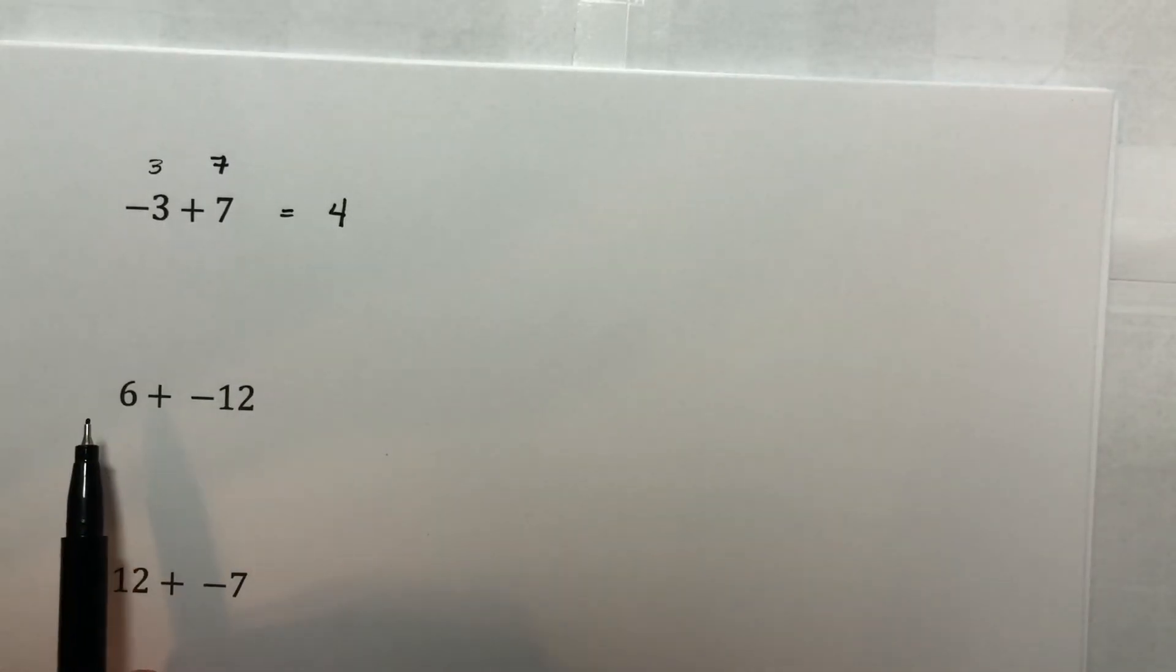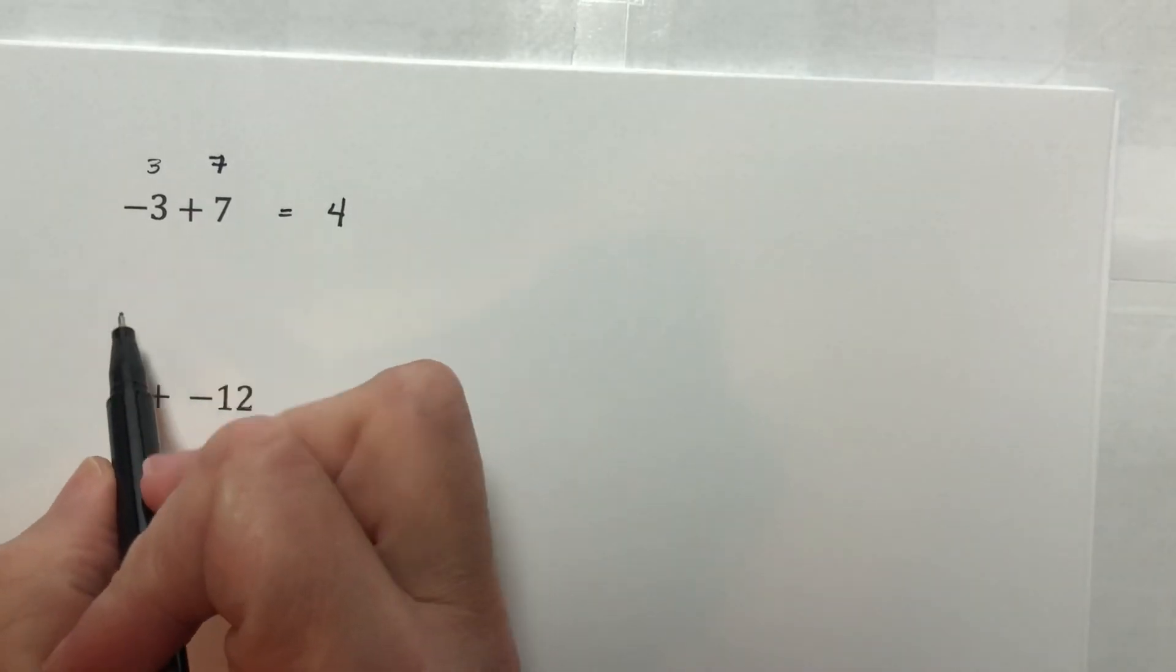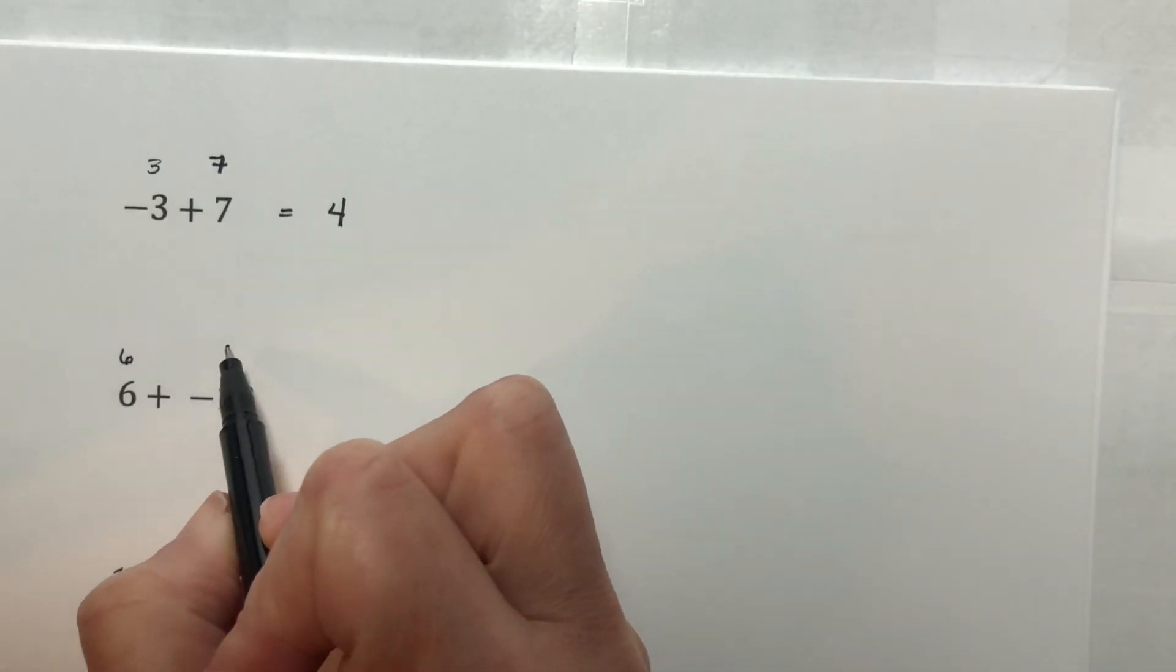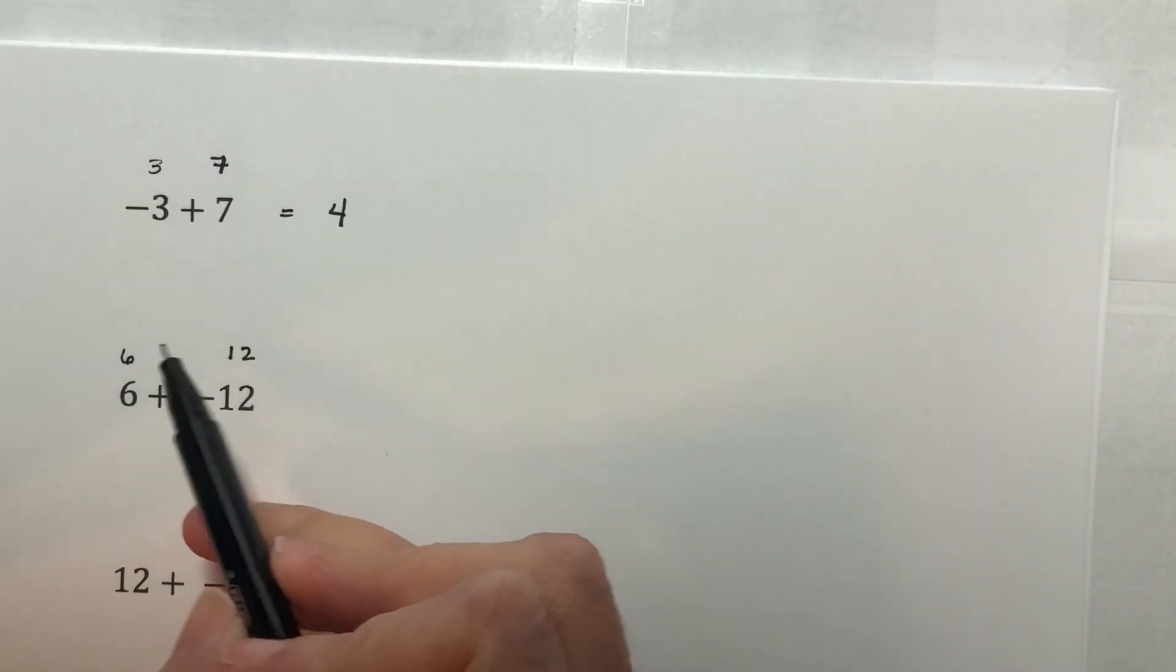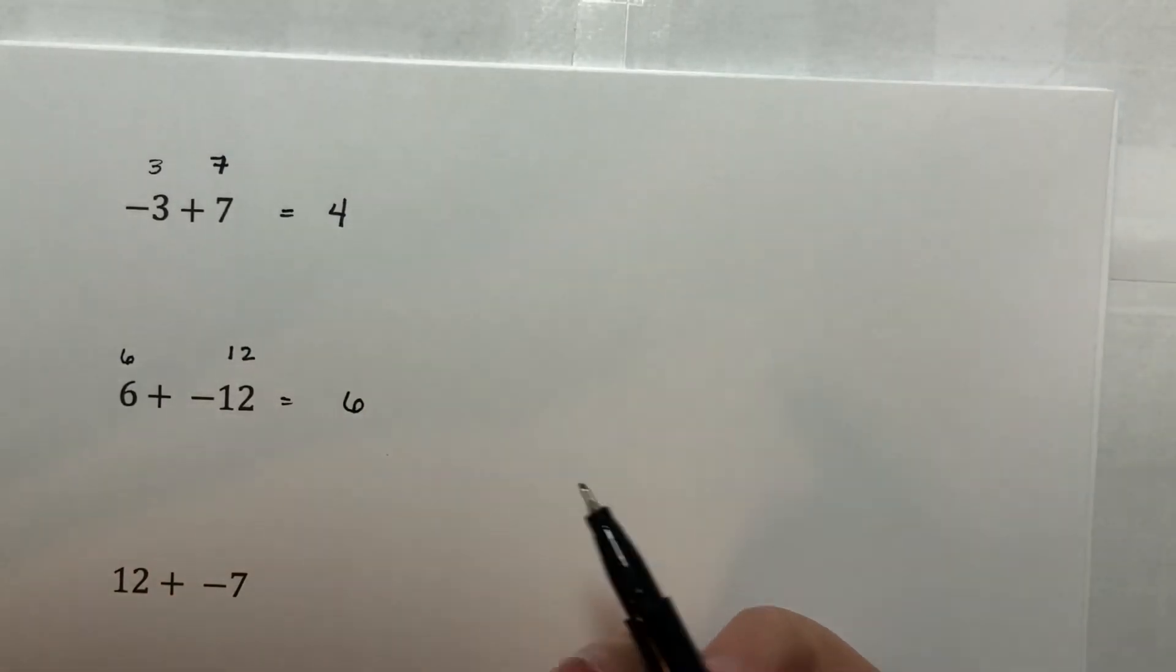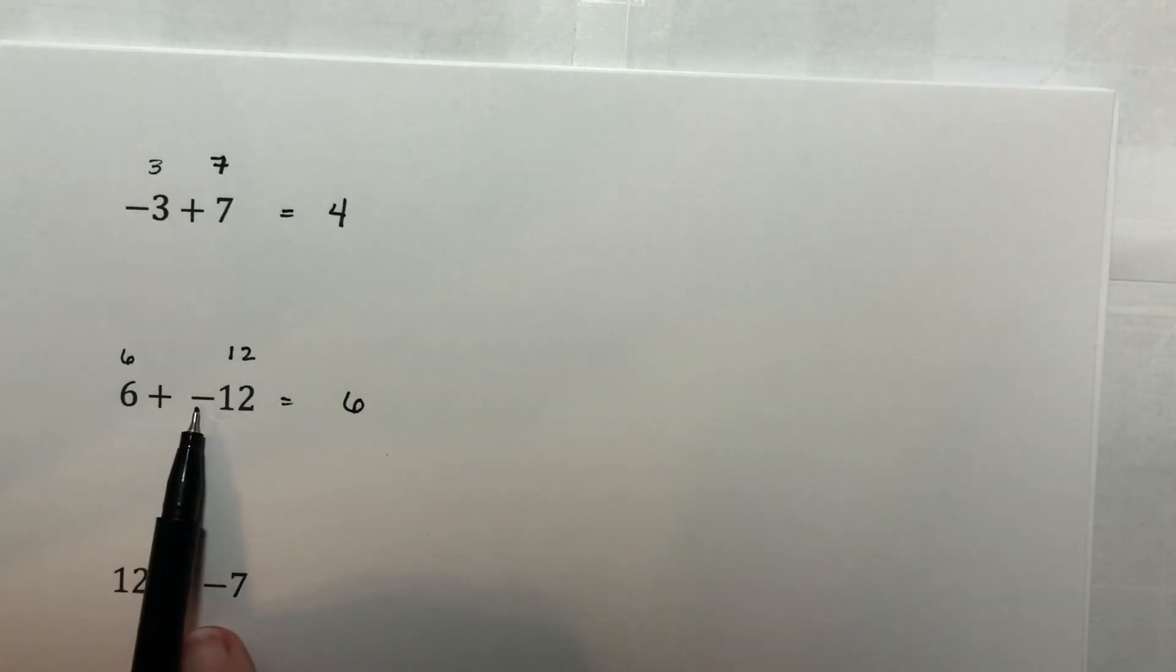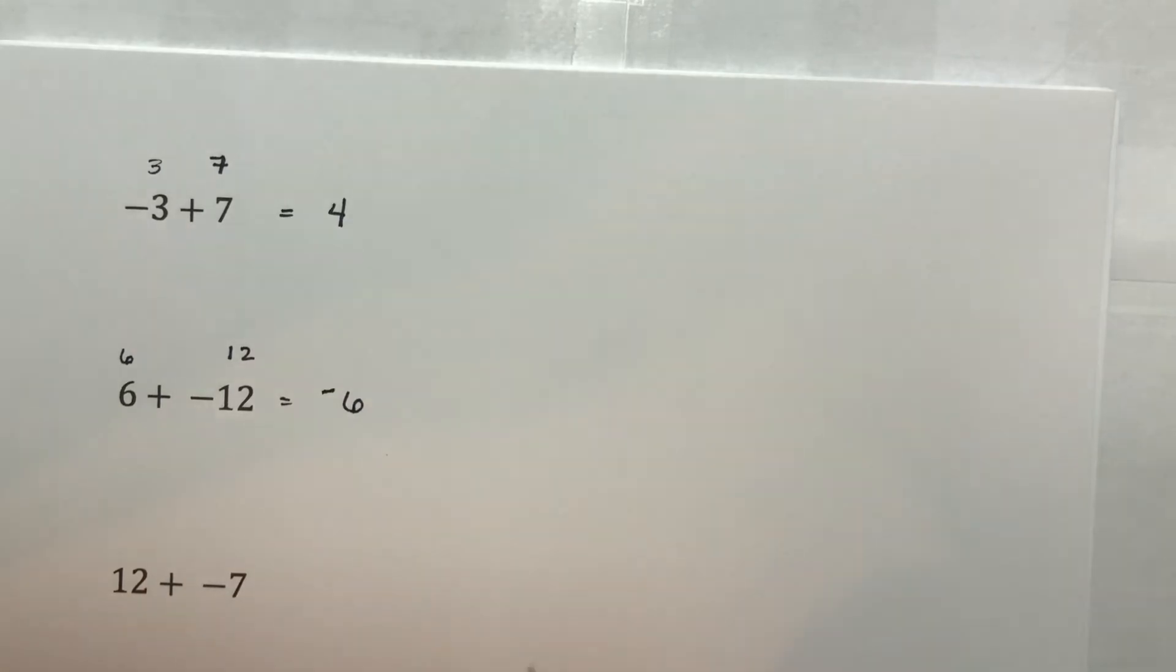Now compare that to here. Six plus negative 12. The absolute value of six is six. The absolute value of negative 12 is positive 12. Subtract the smaller from the larger, 12 minus six is six. Our larger absolute value came from here. It was negative. So this is negative.